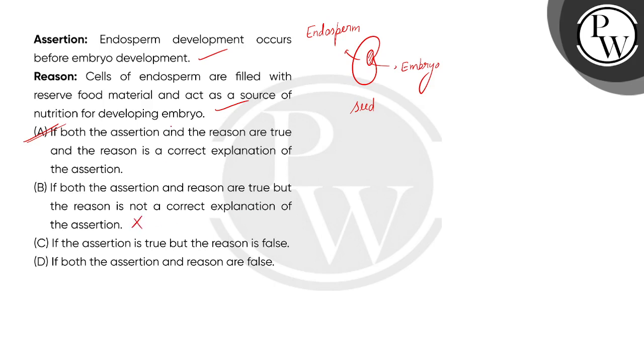If the assertion is true but reason is false, galat hai kyunki reason false nahi hai reason true hai. If both assertion and reason are false, galat hai dono false nahi dono true hai.